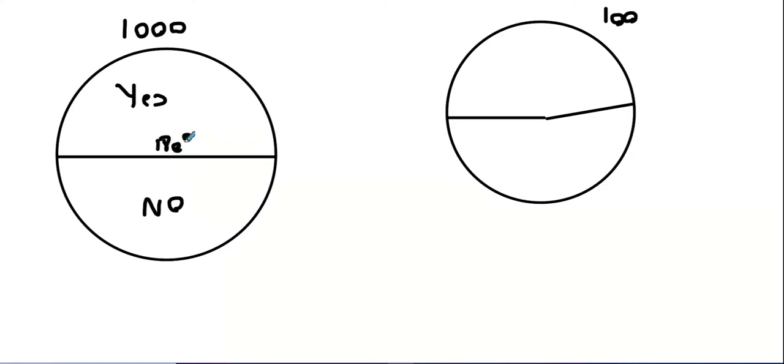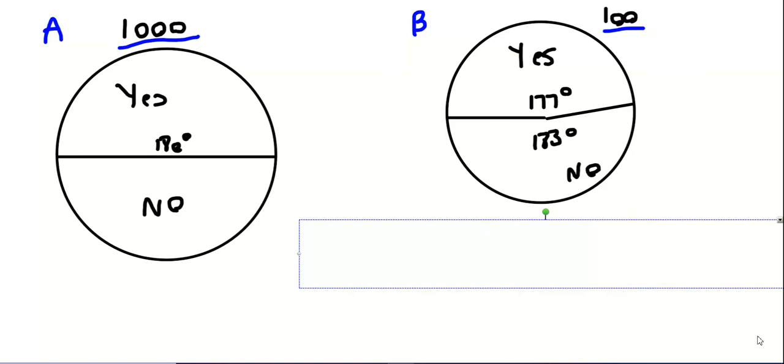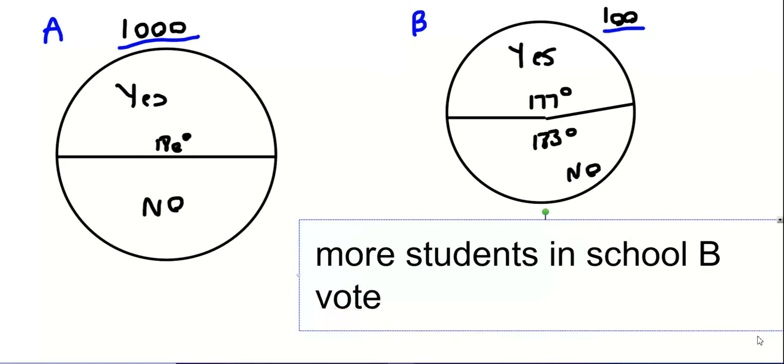They're about 180 degrees, aren't they? And this one, I'll call it 177 degrees for yes and 183 degrees for no. This is school A, which is a big school with a thousand students, and this is school B with 100 students. Good so far? Here's my argument. More students in school B voted no compared to school A. True or false?